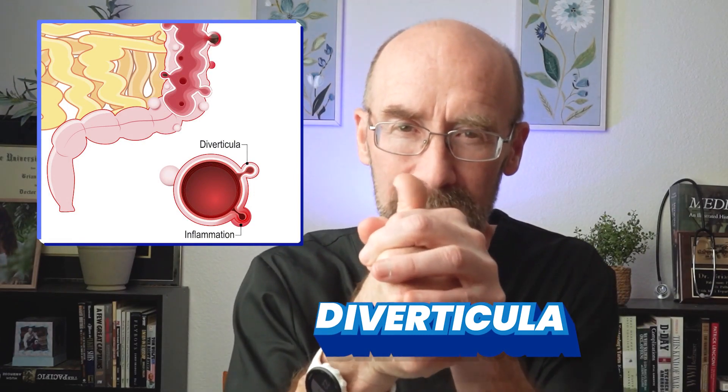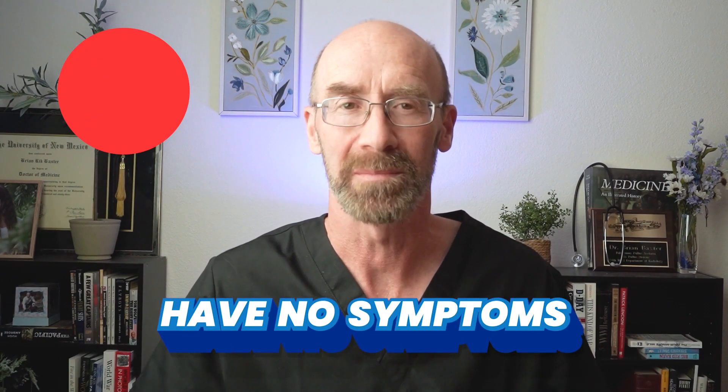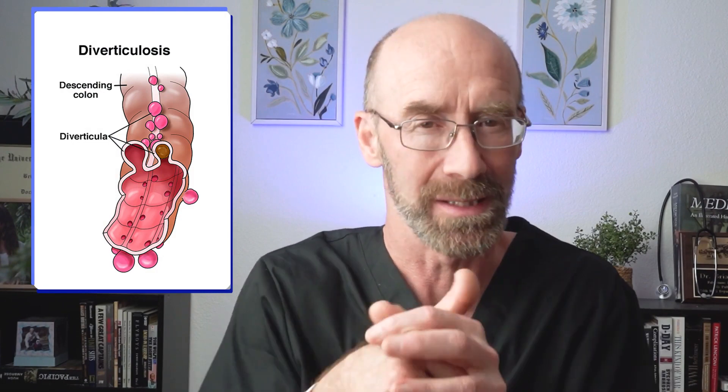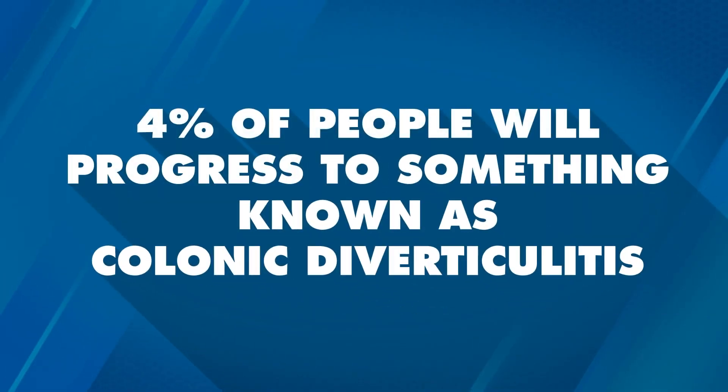To do this, the colon has to do a lot of contraction or squeezing to move the stool from one end to the end where you get rid of it. This squeezing forms a lot of pressure in the walls of the colon. And over time, the colon will develop what are known as diverticula — small little pouches that go through weak spots in the colon wall, in particular where blood vessels pass through. Many people have these pouches and have no symptoms; this condition is known as diverticulosis.